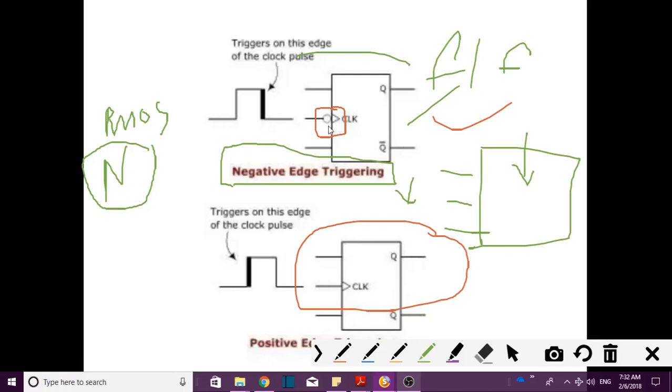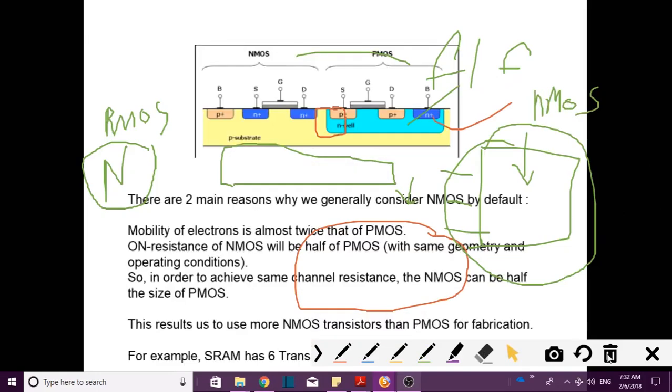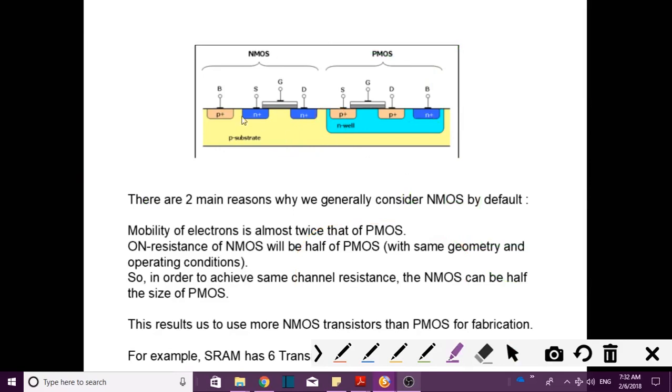Rather compared to this, if positive edge triggering and negative edge triggering both are applied theoretically, both will work at the same speed. But practically we integrate most of our ICs with a specification called NMOS technology. So why NMOS technology - the next question. So I am surely giving the answer for this question.